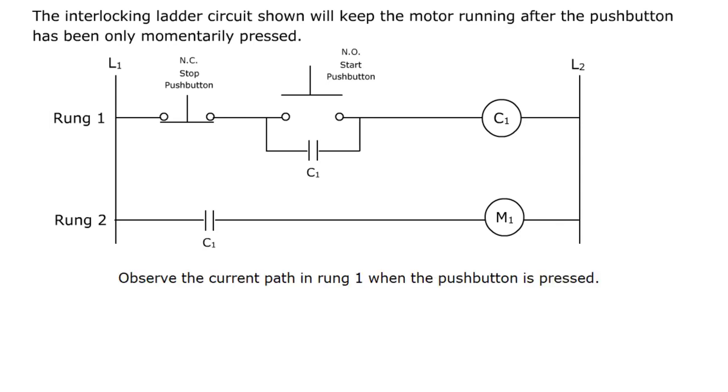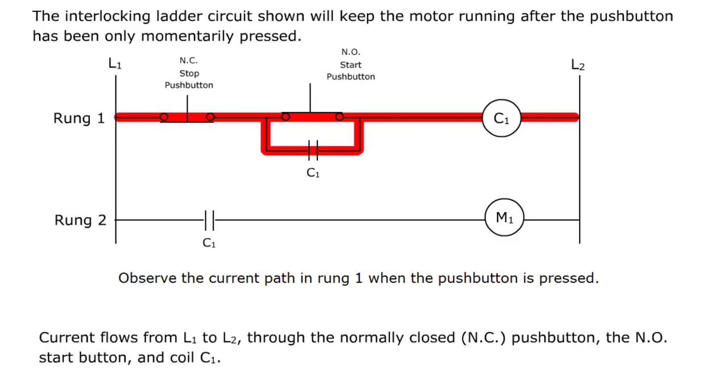Observe the current path in rung 1 when the pushbutton is pressed. Current flows from L1 to L2 through the normally closed NC pushbutton, the NO start button, and coil C1.